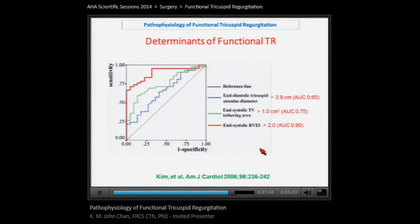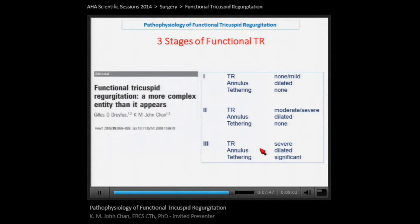Some years ago, we proposed a staging system for functional tricuspid regurgitation that takes into account not only the amount of regurgitation but also the dilatation of the tricuspid annulus and the degree of leaflet tethering. Depending on the stage of functional TR, this would help decide on the appropriate surgical intervention and the type of surgery needed.